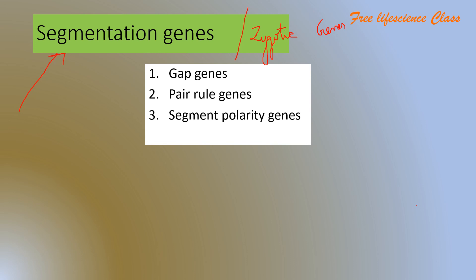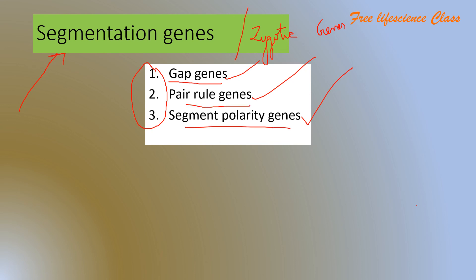Segmentation genes are responsible for the formation of segments — they control the development of small repeated regions of the body that make specific body structures. There are different types of segmentation genes, mainly classified into three groups: gap genes, pair-rule genes, and segment polarity genes. These genes help in setting boundaries and forming body segments. Each of these genes will be explained in detail in the part 3 video.